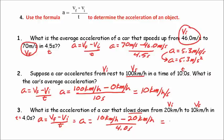This comes out to negative 2.5 kilometers per hour per second. While this car is slowing down, its velocity decreases by 2.5 kilometers per hour every second. The negative sign means slowing down — a negative acceleration, or deceleration. It loses 2.5 kilometers per hour during every second while it's slowing down. That is our answer for number three.